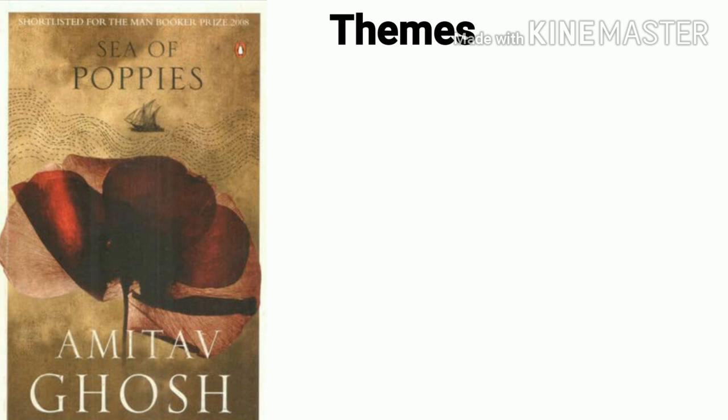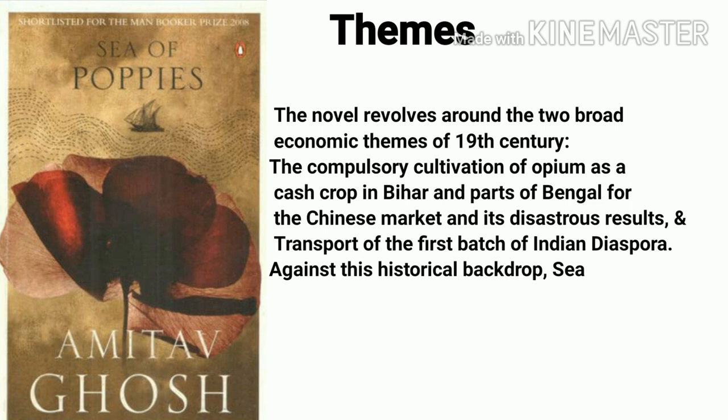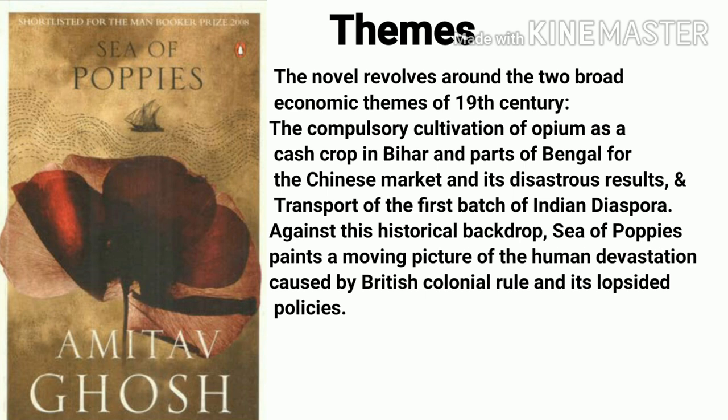The novel centers around two broad economic themes of the 19th century: the compulsory cultivation of opium as a cash crop in Bihar and parts of Bengal for the Chinese market and its disastrous consequences, and the origin and transport of the first batch of the Indian diaspora. Against this historical backdrop, Sea of Poppies paints a moving picture of the human devastation caused by British colonial rule and its lopsided policies.